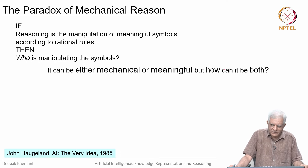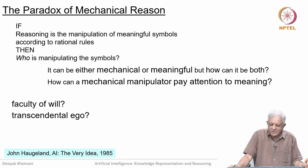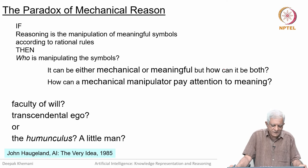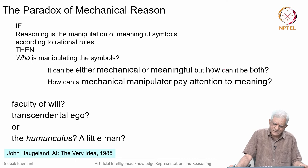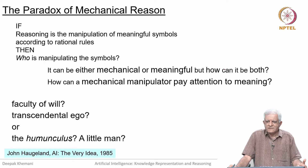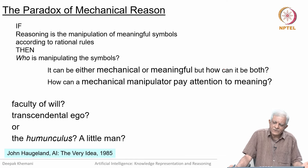Descartes' detractors made all kinds of mocking statements. The paradox is: either something can be mechanical or it can be meaningful — how can it be both? Who is manipulating the symbols? Is it the faculty of will? Is it the transcendental ego? Or the homunculus — the little man? In earlier times people would make small clay men and stories said they would be made alive and do the bidding of their creator. So people said, oh, it is a little man sitting in your head who is manipulating the symbols. But of course then the question arises as to how the little man is thinking — that is not so easy to answer.